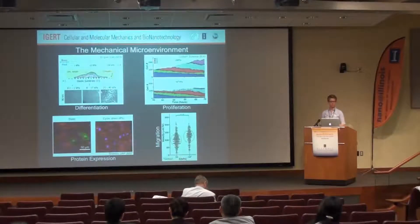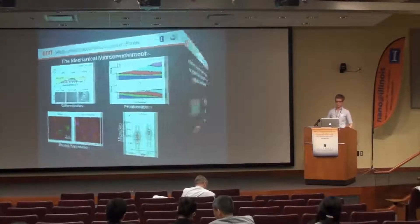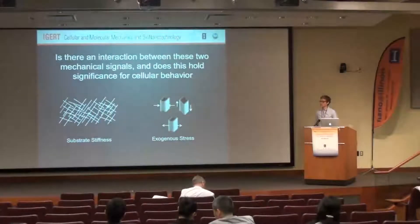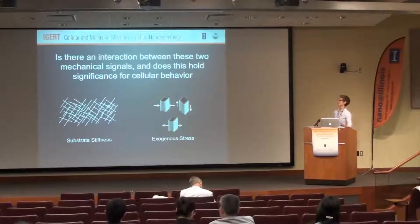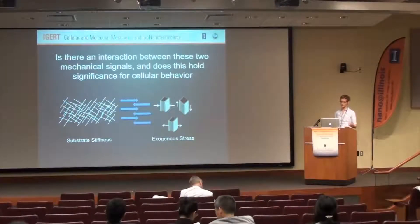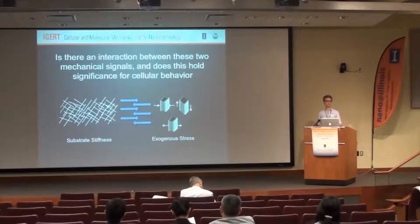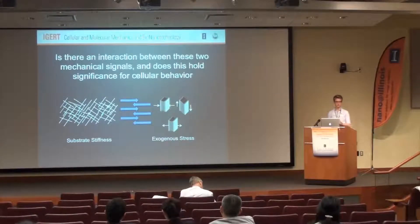The main focus of this project was to see if we can get these two components of the mechanical environment to interact, and if there's a difference in cell behavior because of that interaction. So: does substrate stiffness and the exogenous strain placed on cells interact, and does that regulate cell behavior differently? That's the big picture concept of this project.